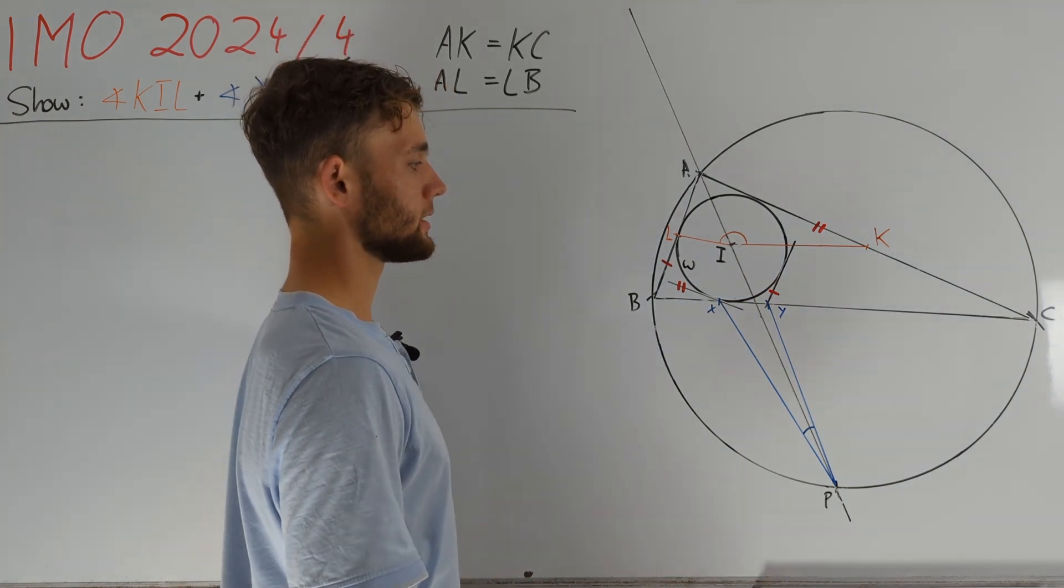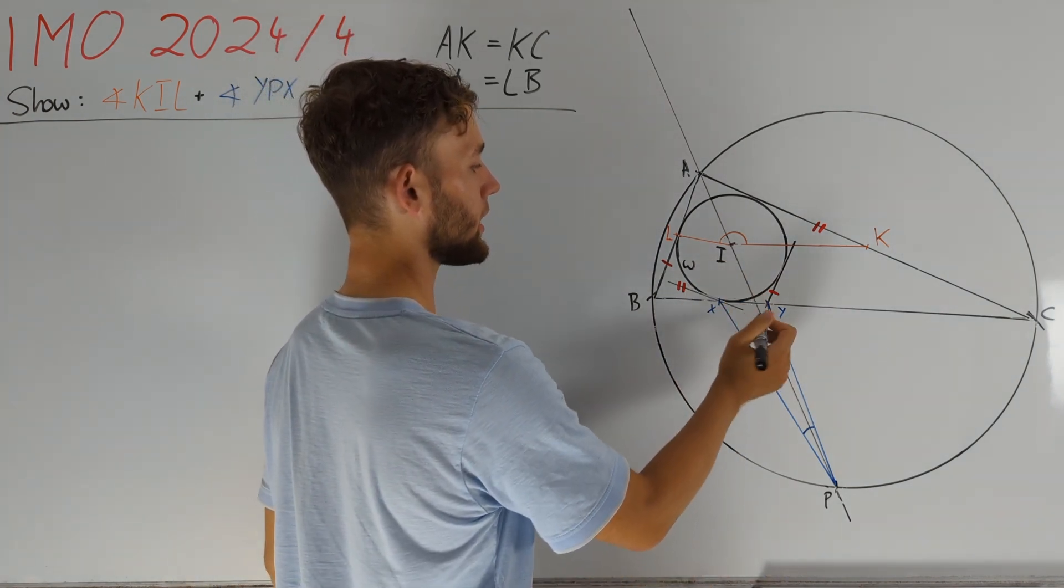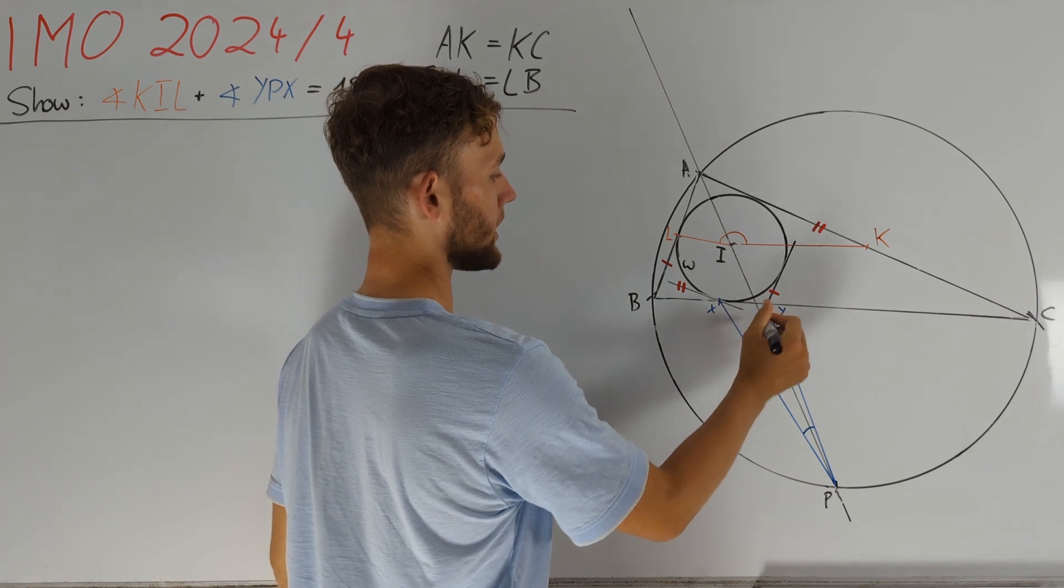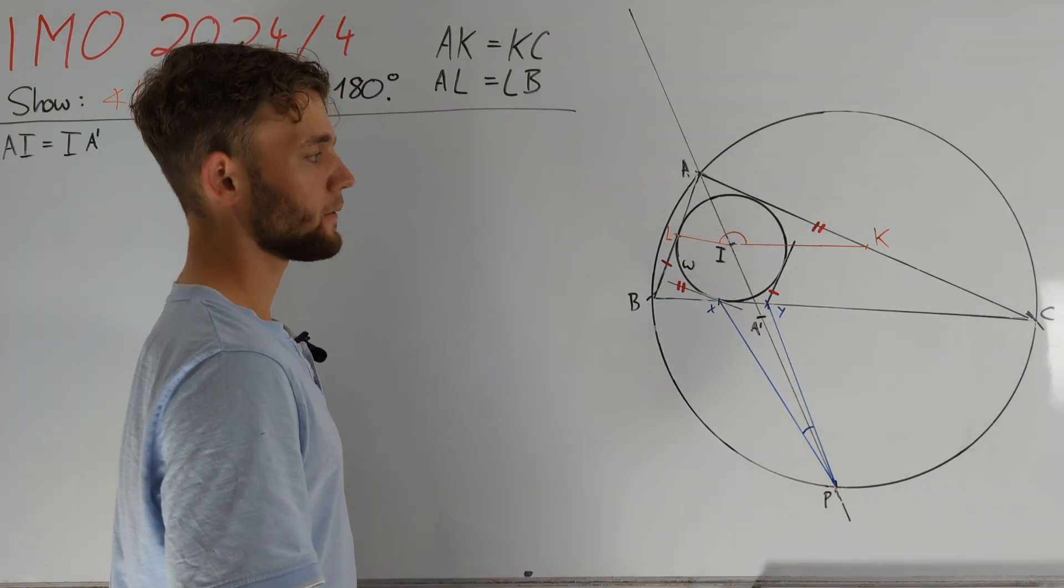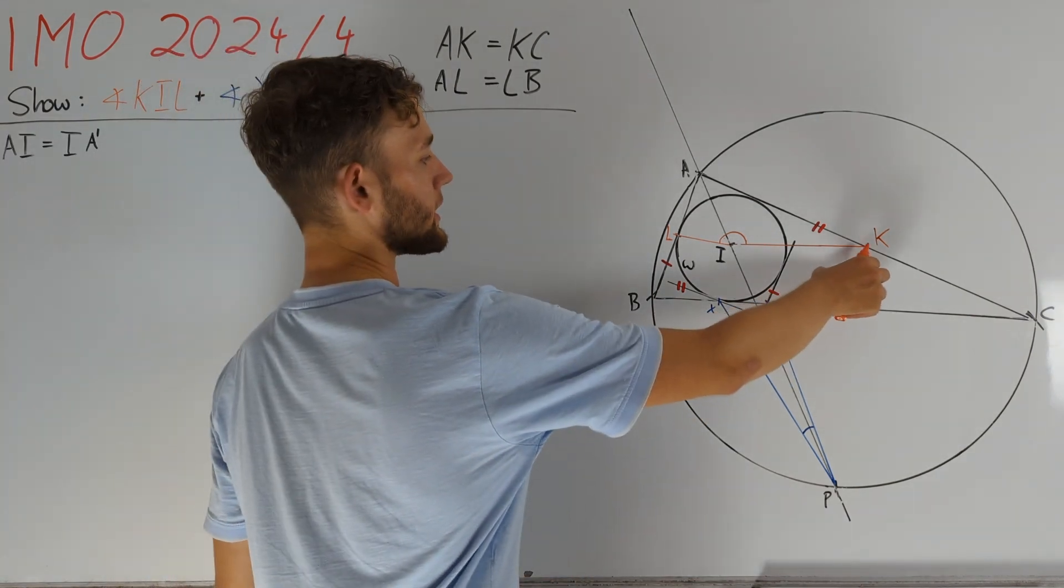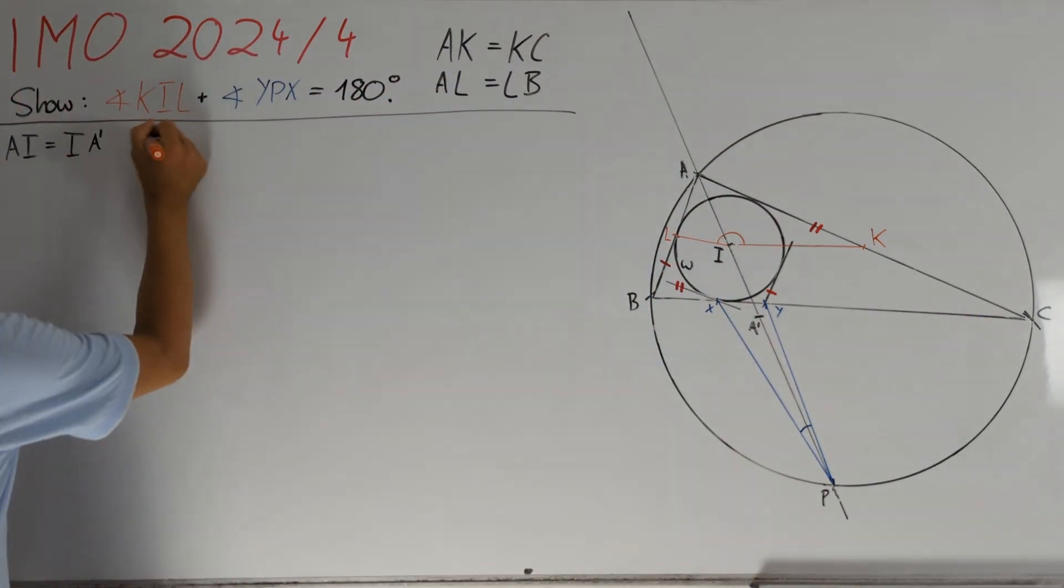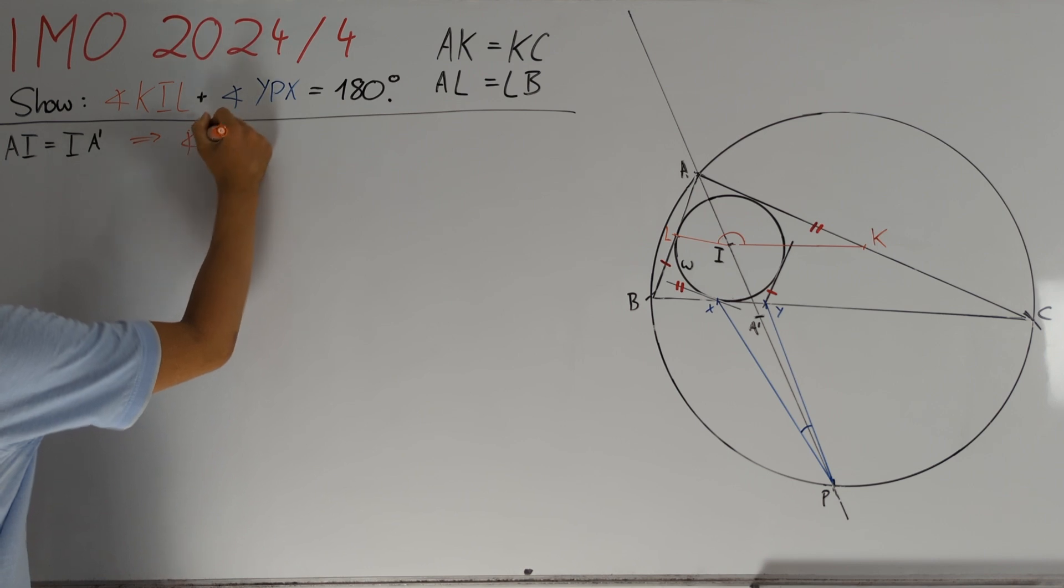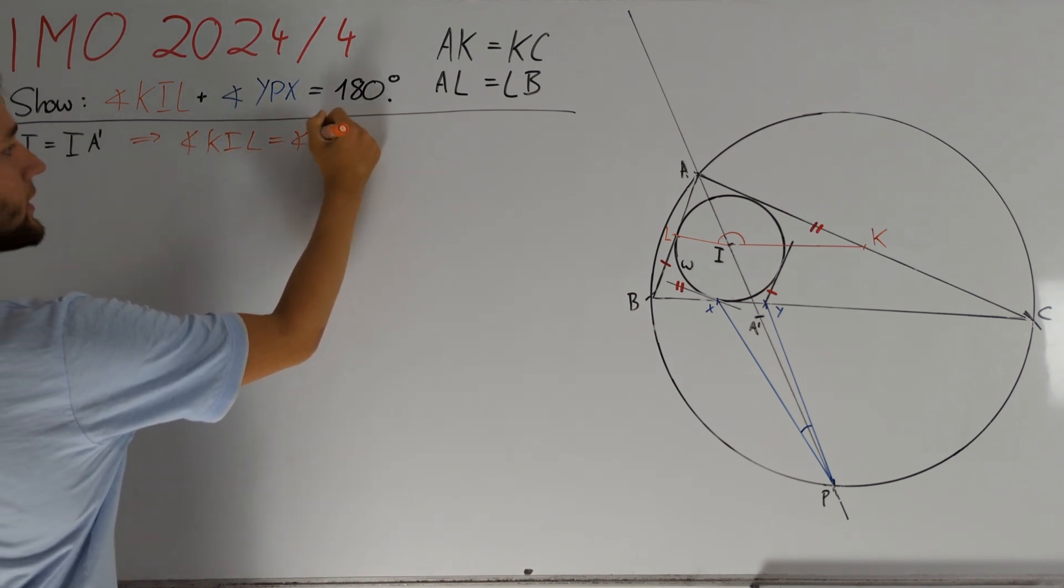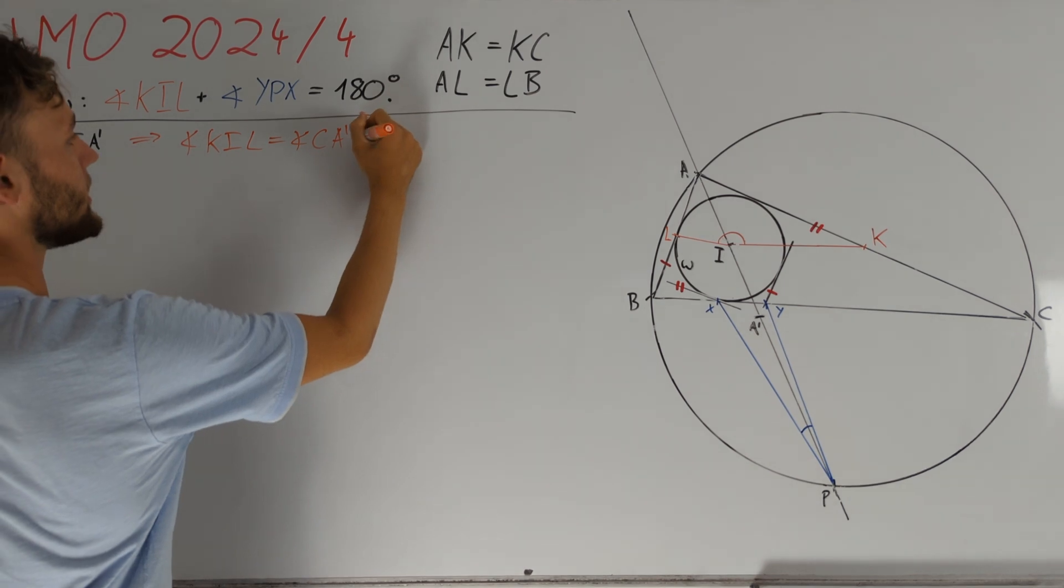And so we want to lastly consider the image of point I that I will denote by A'. Therefore, by similarities of triangles KIL and CA'B we can deduce that angles KIL and angle CA'B are equal.